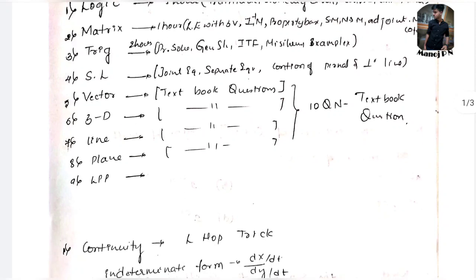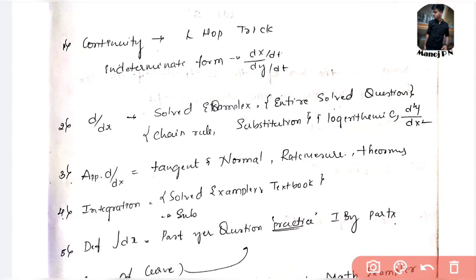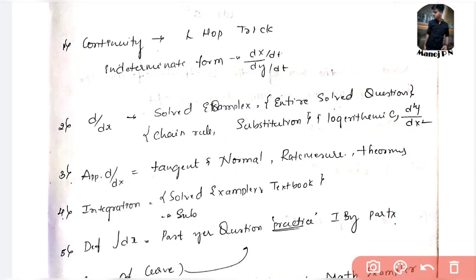For LPP, work through the textbook questions similarly. For continuity, most questions you get in the KCET examination will be in the form of indeterminate forms — that is, infinity by infinity, 0 by infinity, or 1 to the power infinity. If you find that kind of problem, you can easily crack it using L'Hôpital's rule. It's one of the easiest topics and you can score easily.